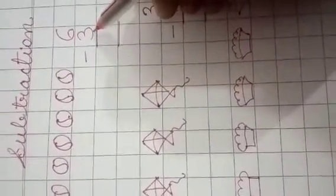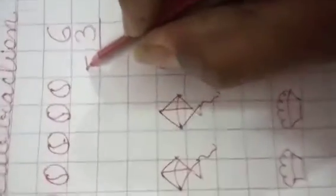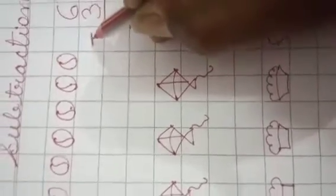Now children, let's practice subtraction in book. Now, 6 minus 3. So, I have 1, 2, 3, 4, 5, 6 balls. Out of 6 balls, we are going to cut 3 balls. So, cut the balls with me. 1, 2, 3.